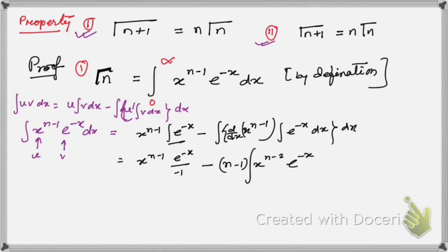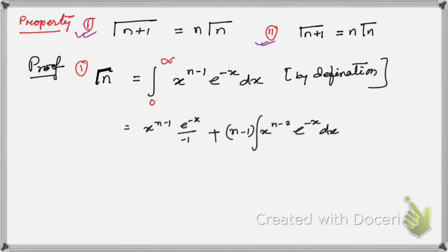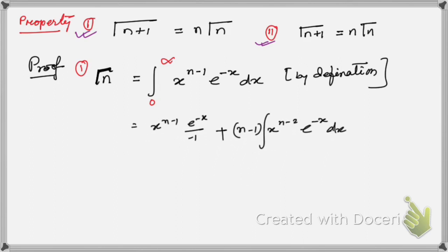Now let me take the final result and write the limits from 0 to infinity. We apply the limits 0 to infinity to both terms. If you put infinity, e^(−∞) = 0, and 0 times anything is 0. So for x → ∞, this term becomes 0.